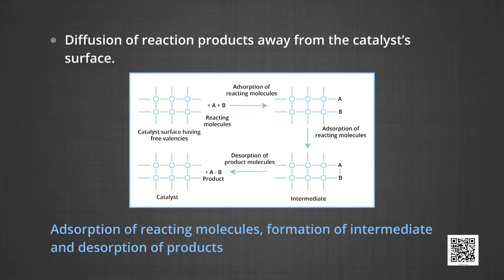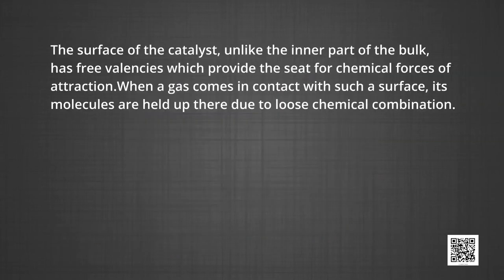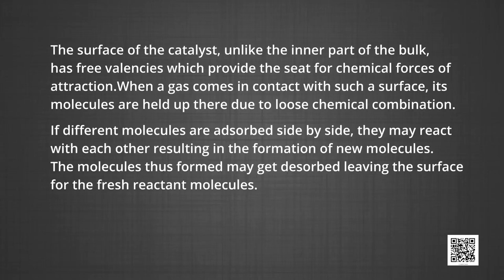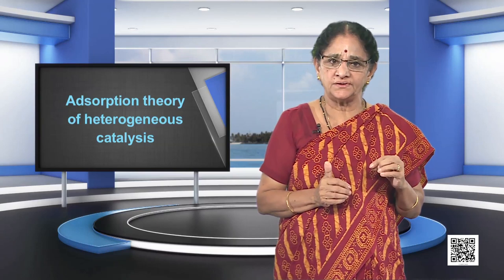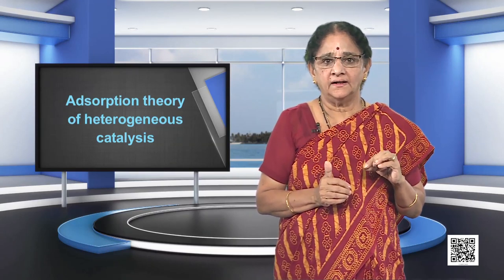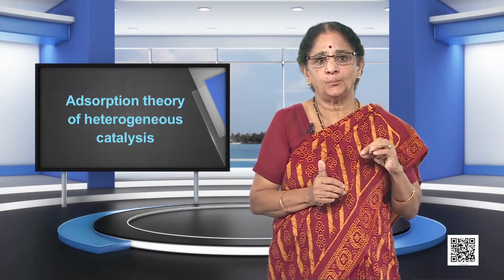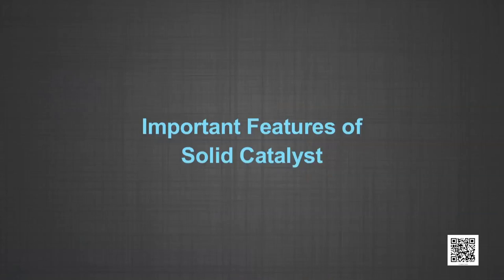These steps are well illustrated in the diagram. The surface of the catalyst, unlike the inner part of the bulk, has free valences which provide the seat for chemical forces of attraction. When a gas comes in contact with such a surface, its molecules are held up there due to loose chemical combination. If different molecules are adsorbed side by side, they may react with each other resulting in the formation of new molecules, which may then get desorbed, leaving the surface for fresh reactant molecules. This theory explains why the catalyst remains unchanged in mass and chemical composition at the end of the reaction, and is effective even in small quantities. However, it does not explain the action of catalytic promoters and catalytic poisons.